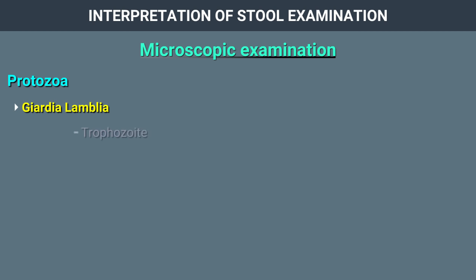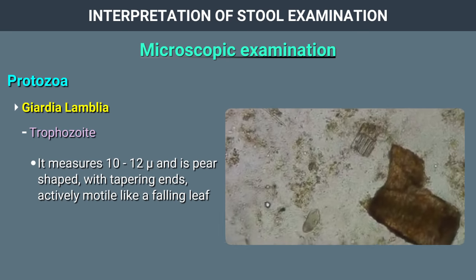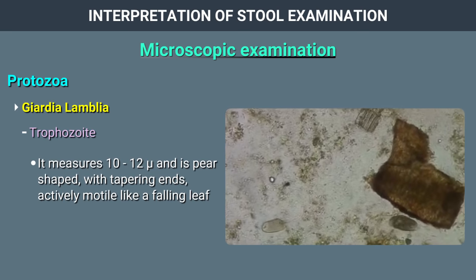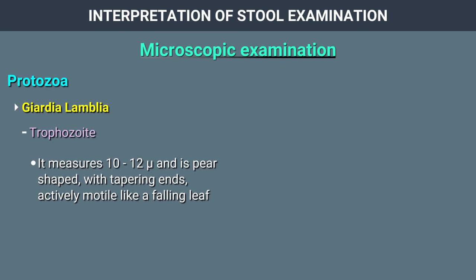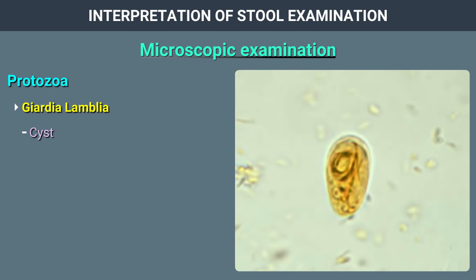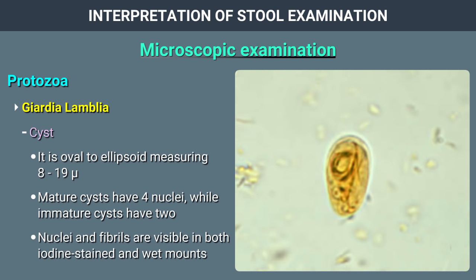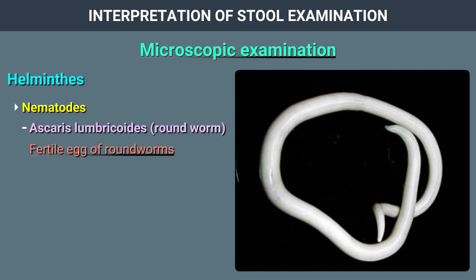Giardia lamblia trophozoite measures 10 to 12 microns. It is pear-shaped with tapering ends, actively motile like a falling leaf, and has two centrally placed nuclei and uniform granular cytoplasm. The cyst of Giardia lamblia is oval to ellipsoid in shape, measuring 8 to 19 microns. Mature cysts have 4 nuclei while immature cysts have 2. Nuclei and fibrils are visible in both iodine-stained and wet mounts.